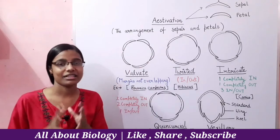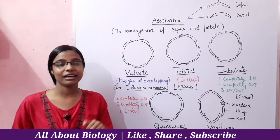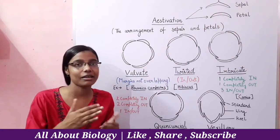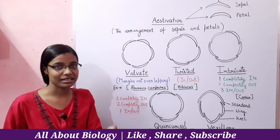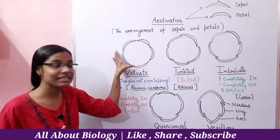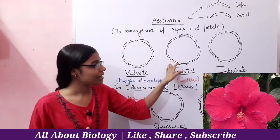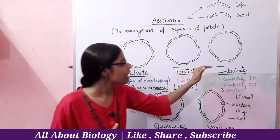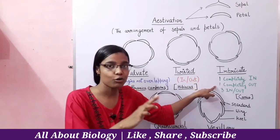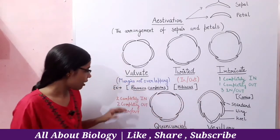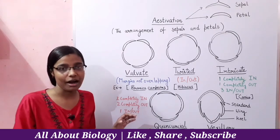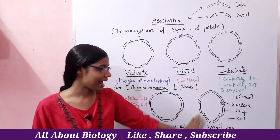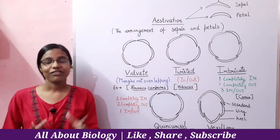So there are five different types of Estivations. In Valvate, there is no margin overlap. In Twisted Estivation, each petal or sepal has one margin inside and one margin outside. In Imbricate, one petal is completely inside, one petal is completely outside, and the remaining three petals have margins both in and out. In Quincuncial, two petals are completely inside, two are completely outside, and one petal has one edge inside and one edge outside. In Vexillary Estivation, you see standard, wing, and keel.